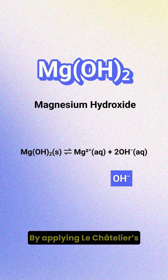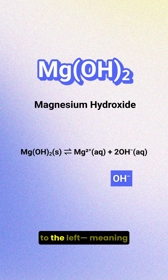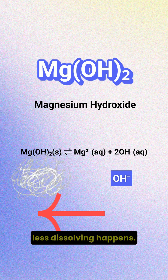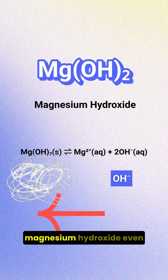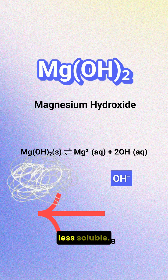By applying Le Chatelier's principle, adding more product ions pushes the equilibrium to the left, meaning less dissolving happens. So, adding base makes magnesium hydroxide even less soluble.